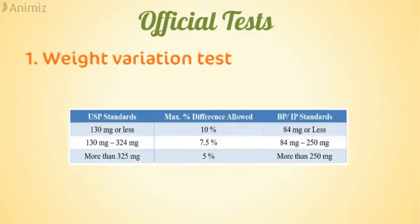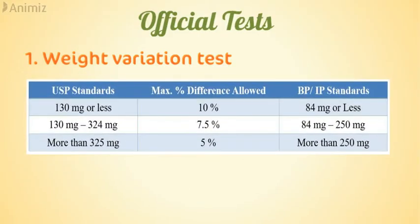The permitted percent weight variation is ±10% for tablets of 130 mg or less (USP) or 84 mg or less (BP/IP); ±7.5% for tablets of 130–324 mg (USP) or 84–250 mg (BP/IP); and ±5% for tablets more than 325 mg (USP) or more than 250 mg (BP/IP).